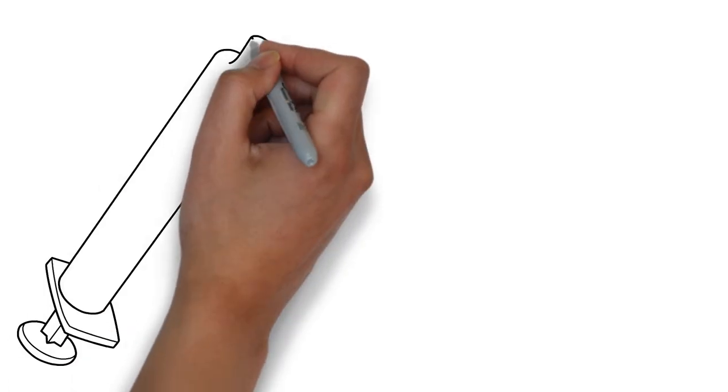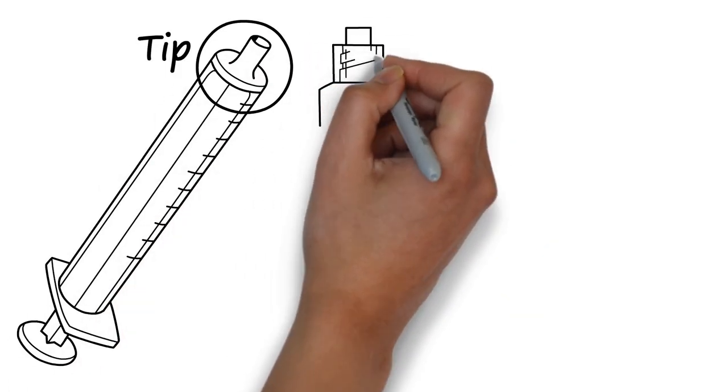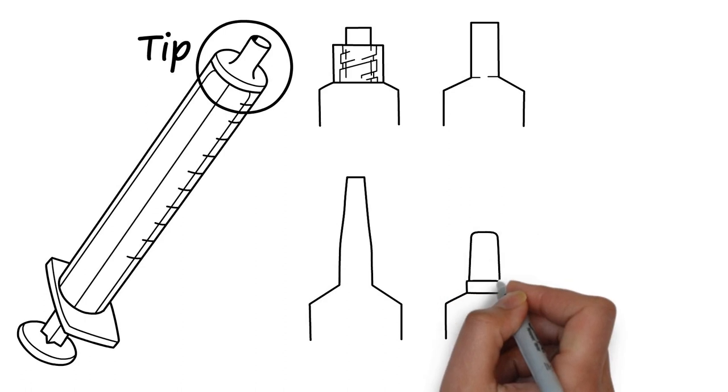The third key component of a syringe is the tip. While there are many different tip types available, the most common are luer lock, luer slip, catheter and oral.